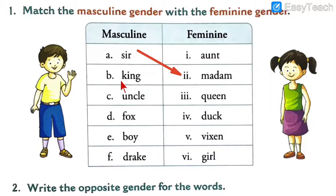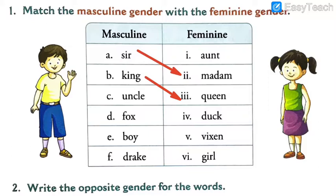Let us move on to question B: king. What is the feminine for king? You might have heard 'king and queen of this country', so the feminine for king is queen. Students, I hope you are also solving this in your books. Those solving in the textbook can just match as I am doing here. Those solving in the rough book can write 'sir = madam', 'king = queen' — this way you can do match-the-following easily, and later when you get your textbook you can write the answers there as well.